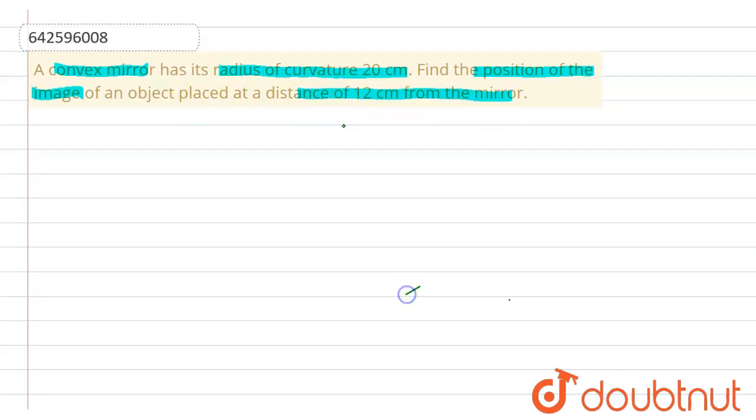So first of all, we have a convex mirror like this, and an object is placed over here at a distance u. Its center of curvature is on this side, and its radius of curvature is r.